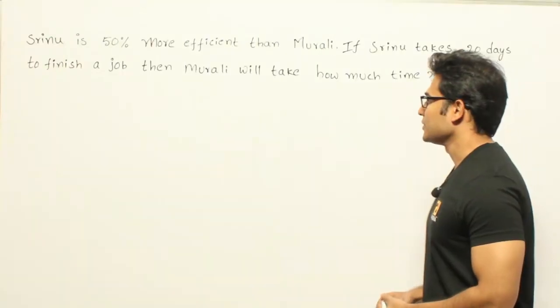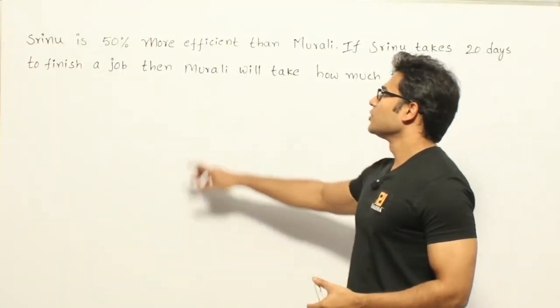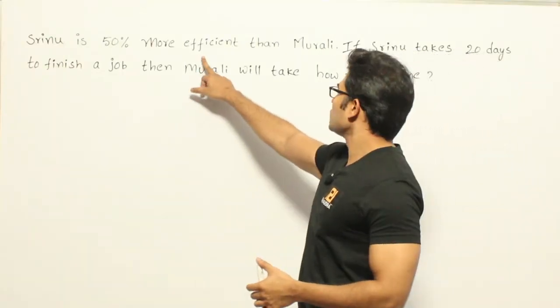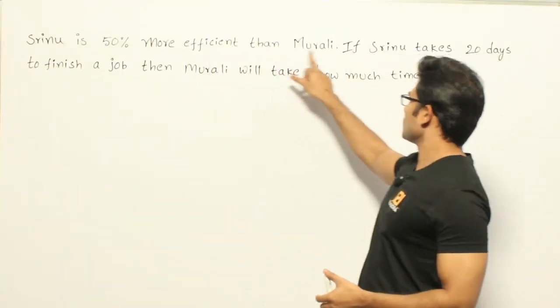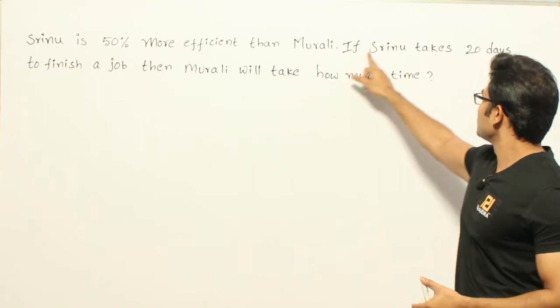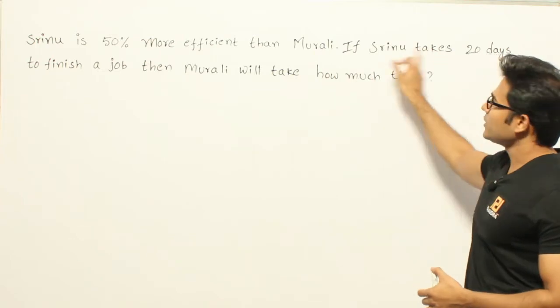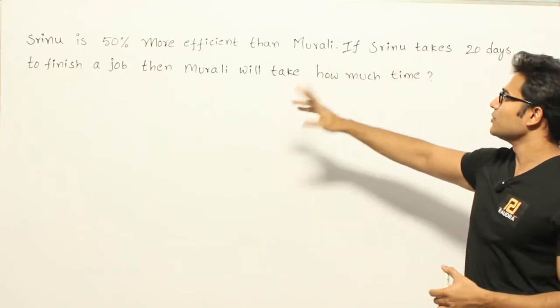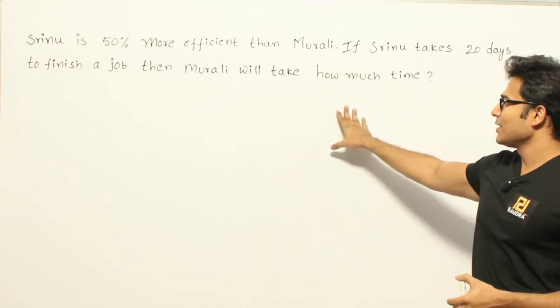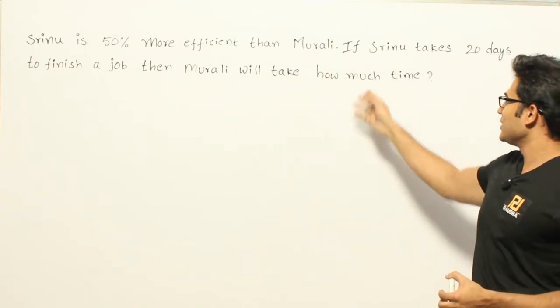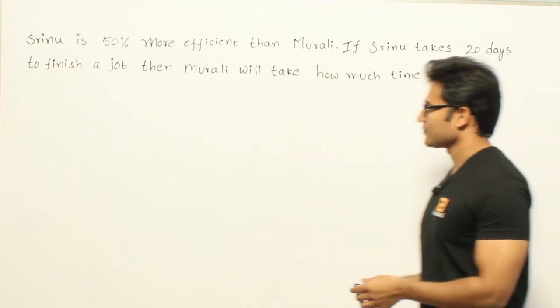Now let's see this question. Sreedoo is 50% more efficient than Murali. If Sreedoo takes 20 days to finish a job, then Murali will take how much time?